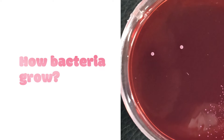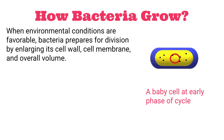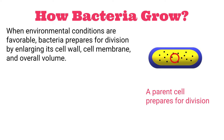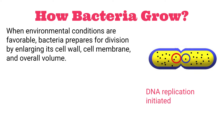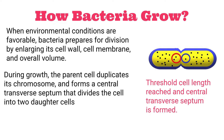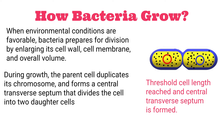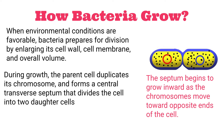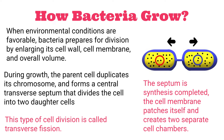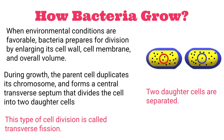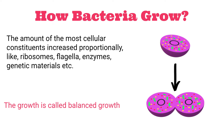Let's check how bacteria actually grow. When environmental conditions are favorable for microbial growth, bacteria start macromolecule synthesis rapidly, and as a result, the size of the bacterium also increases. During growth, the parent cell enlarges, duplicates its chromosome, and forms a central transverse septum that divides the cell into two daughter cells. That is why this type of cell division is called transverse fission. This growth is called balanced growth because the amount of most cellular constituents — like ribosomes, flagella, enzymes, and genetic material — increases proportionally.